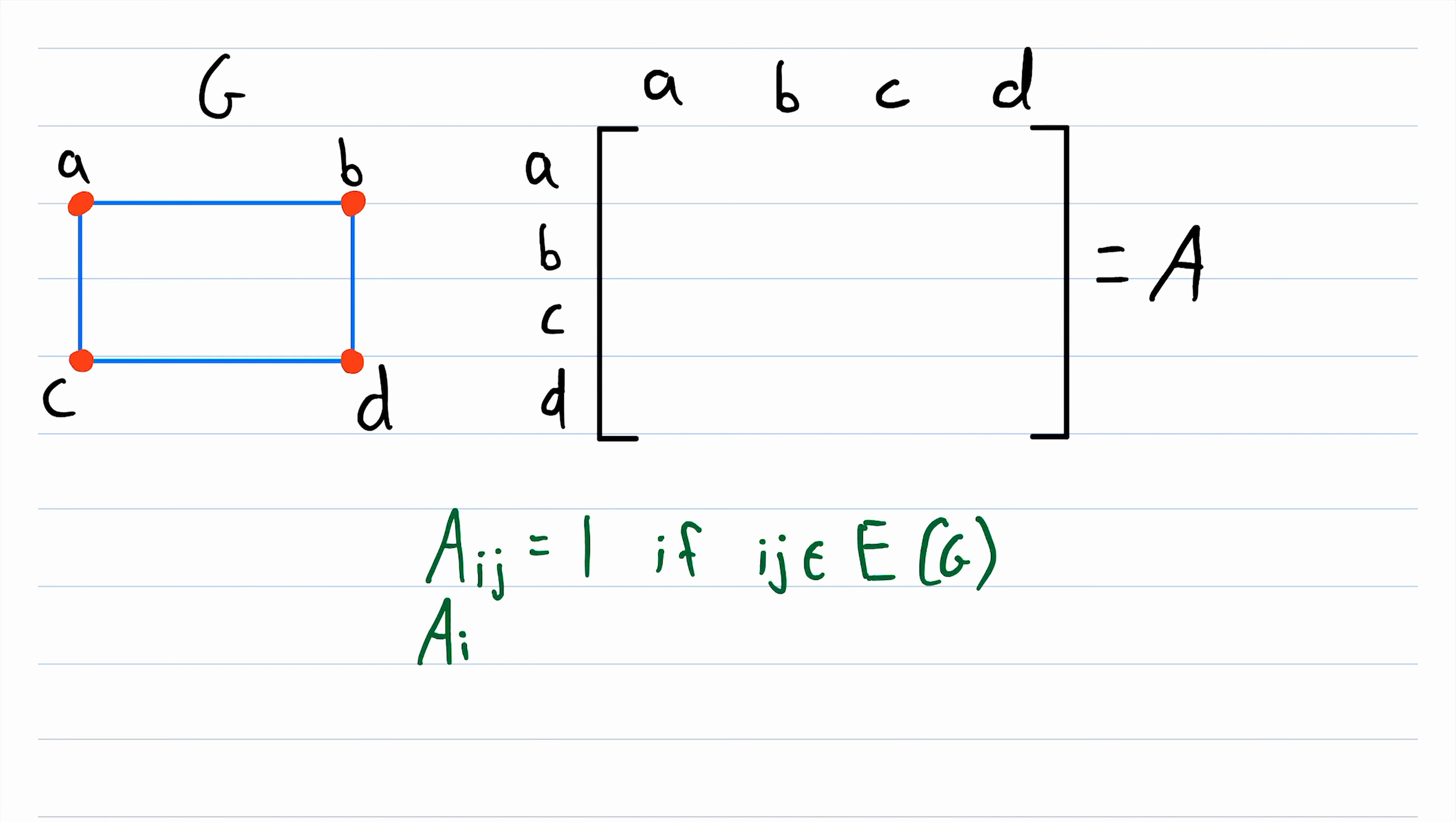And the entry in the i-th row and j-th column is equal to 0 otherwise, so the matrix is entirely comprised of zeros and ones. If the vertex represented by the i-th row is adjacent to the vertex represented by the j-th column, then that entry is equal to 1, otherwise it's equal to 0.